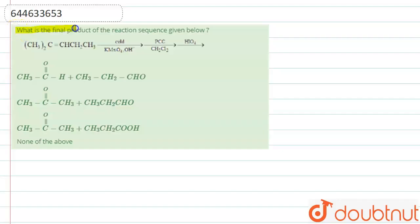We have to tell what is the final product of the reaction sequence given below. So let us check the reaction mechanism. We are provided with the reactant CH3-C(CH3)-CH-CH2-CH3 with a pi bond.